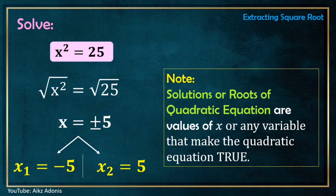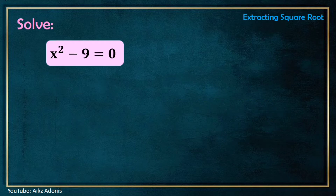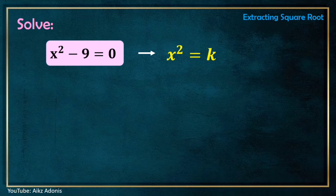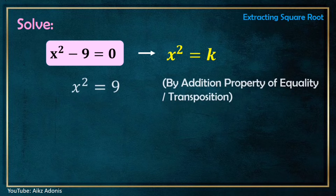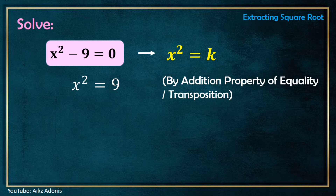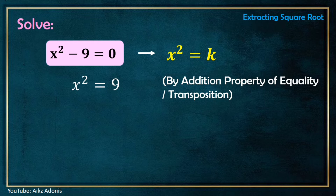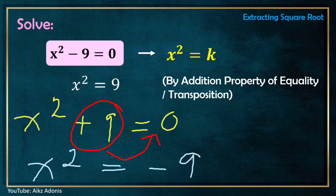Now let's solve x² − 9 = 0. Is this equation in the form x² = k? Not yet. We will apply the addition property of equality, or transposition, to rewrite it in the form x² = k. By transposition, we move negative 9 to the right and it becomes positive 9. When we transpose a number, we change its sign — that's why negative 9 becomes positive 9.